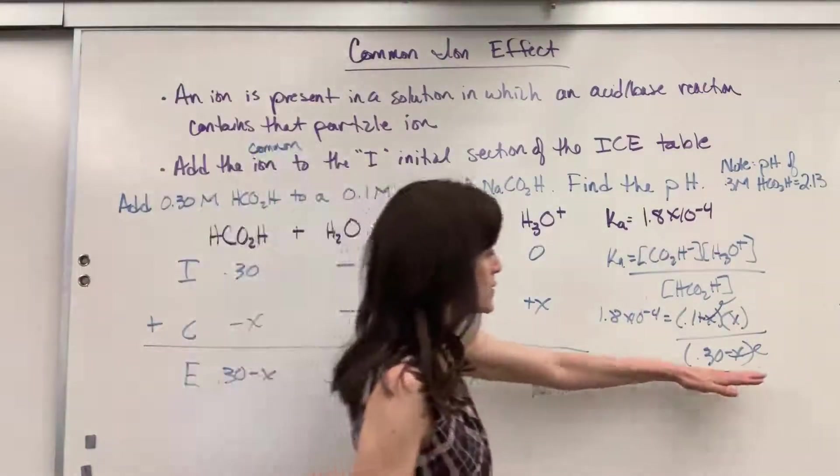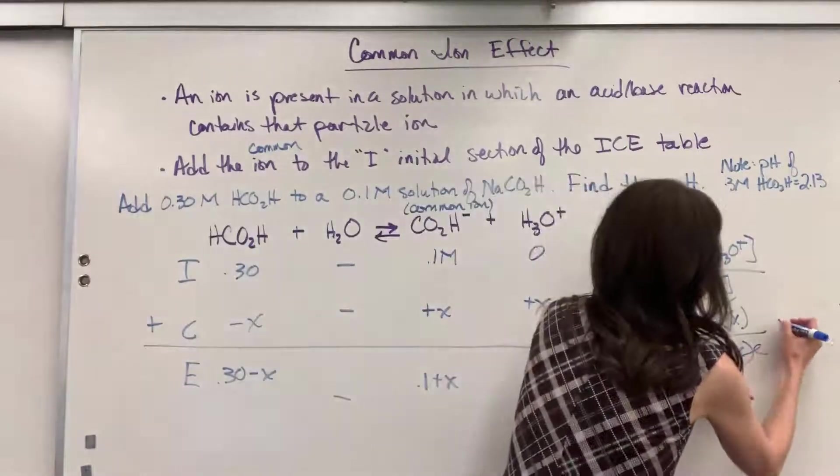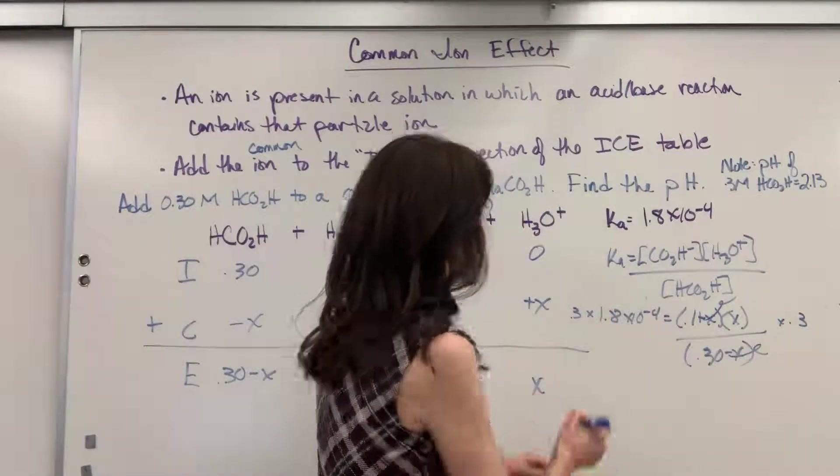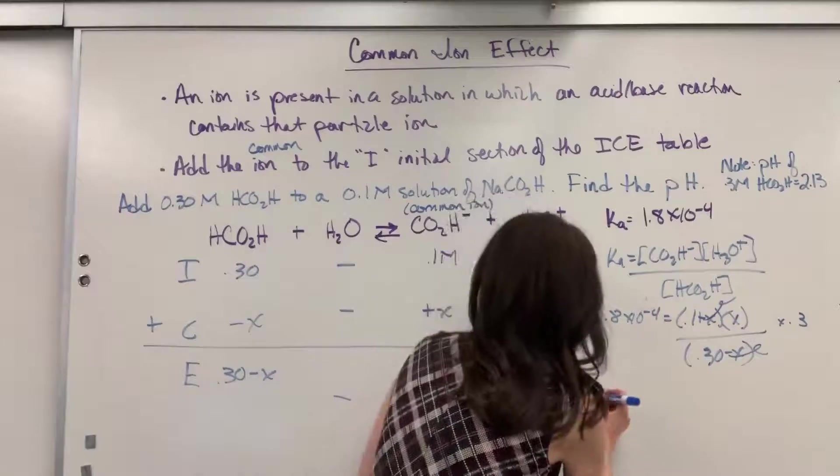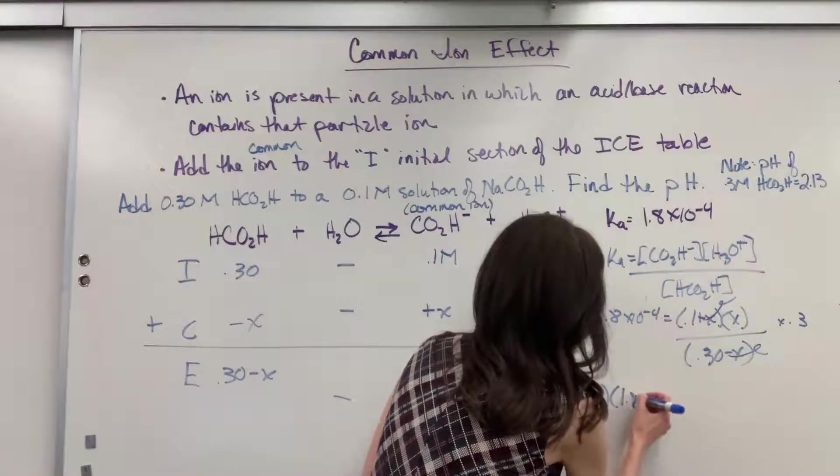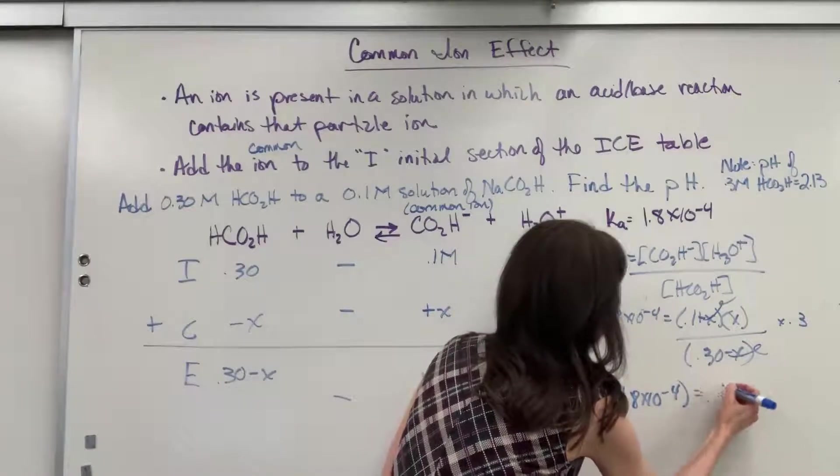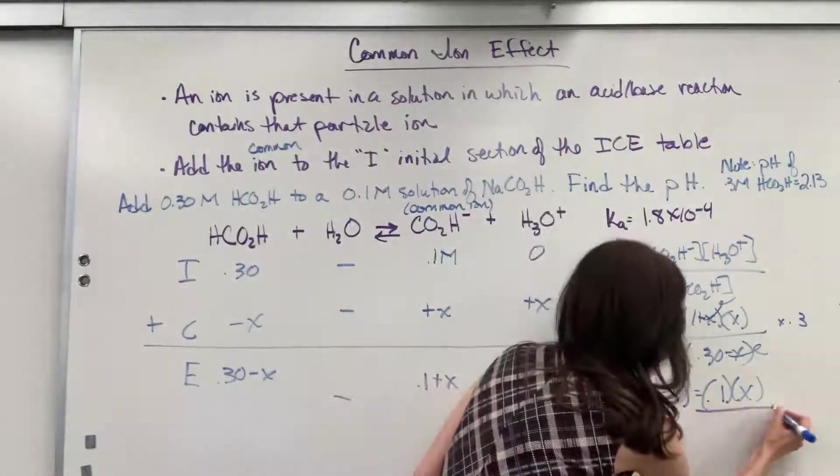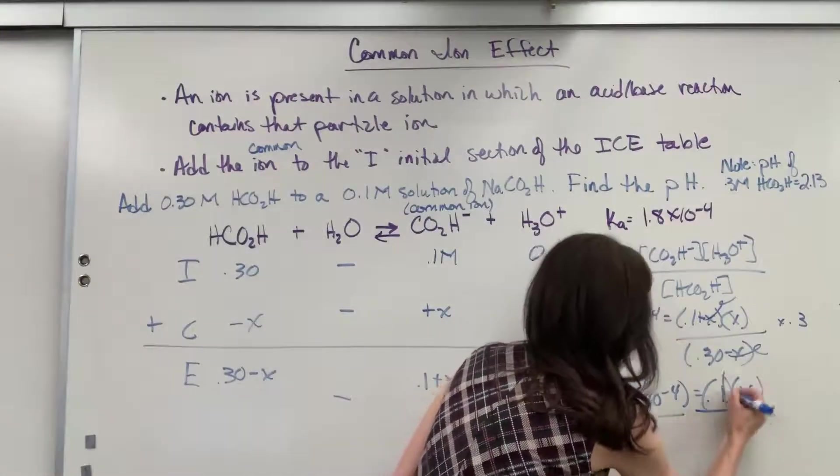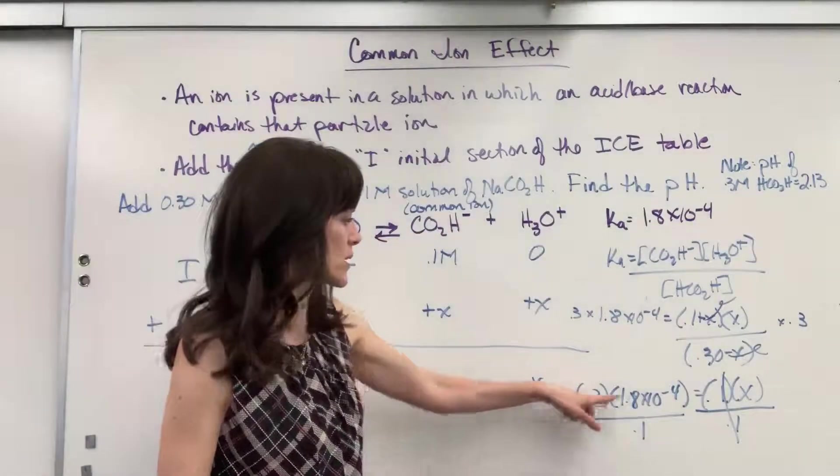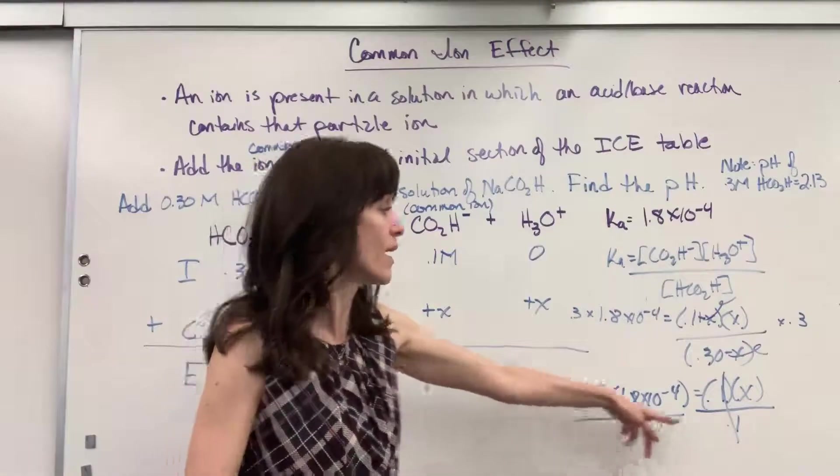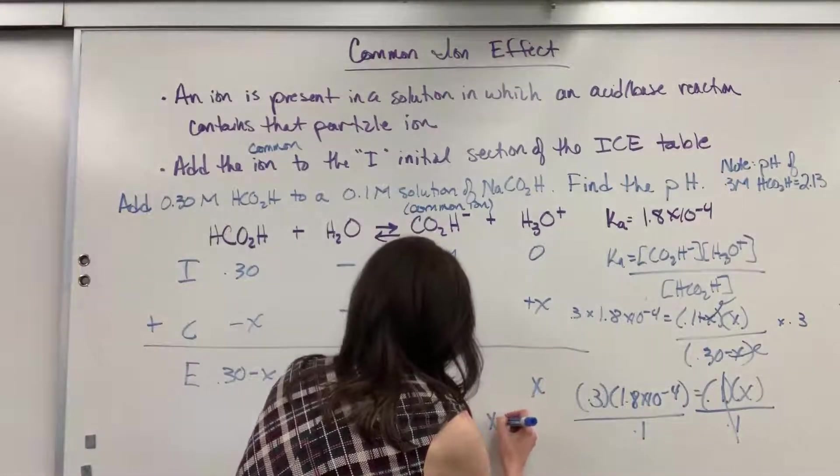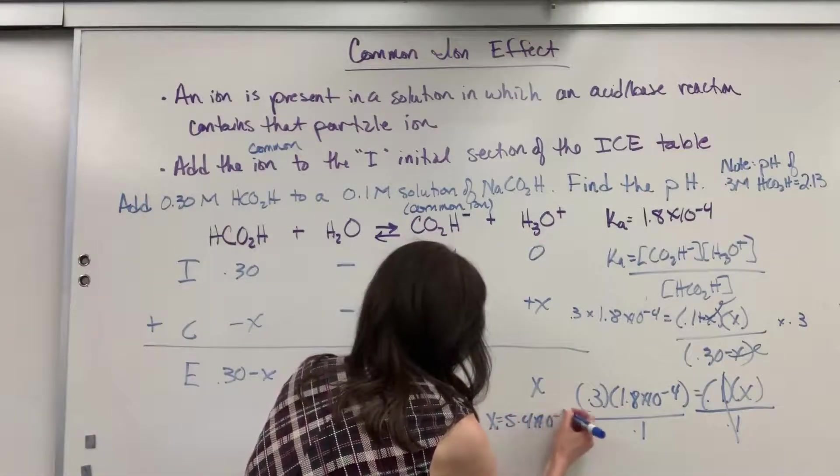So doing the math, I want to get rid of this denominator. I'm going to multiply both sides by 0.3. Let's see, I'm going to write it out for you. 1.8 times 10 to the minus 4 equals 0.1 times X. Well, I still have to solve for X. So let's go ahead and divide both sides by 0.1. All right, now you can see that math clearly. 0.3 times 1.8 times 10 to the minus 4 divided by 0.1 equals X. And when we do that, we get X equals 5.4 times 10 to the minus 4.